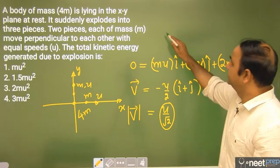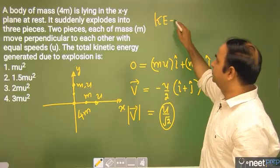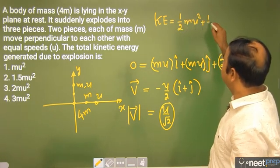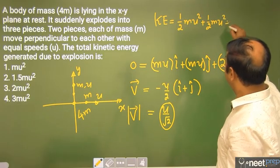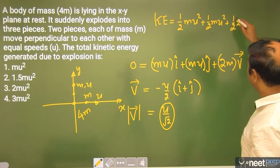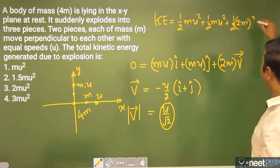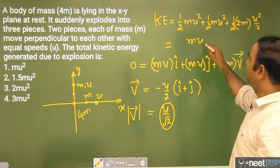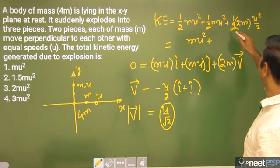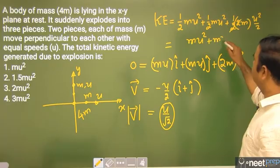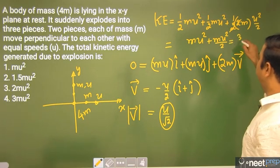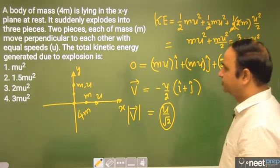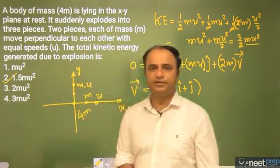So kinetic energy generated in the explosion equals half mu square plus half mu square plus half into 2m into u by root 2 square which is u square by 2. Add this up: mu square plus mu square plus mu square by 2, this equals 3 by 2 mu square. So this is the second option, 1.5 is 3 by 2.